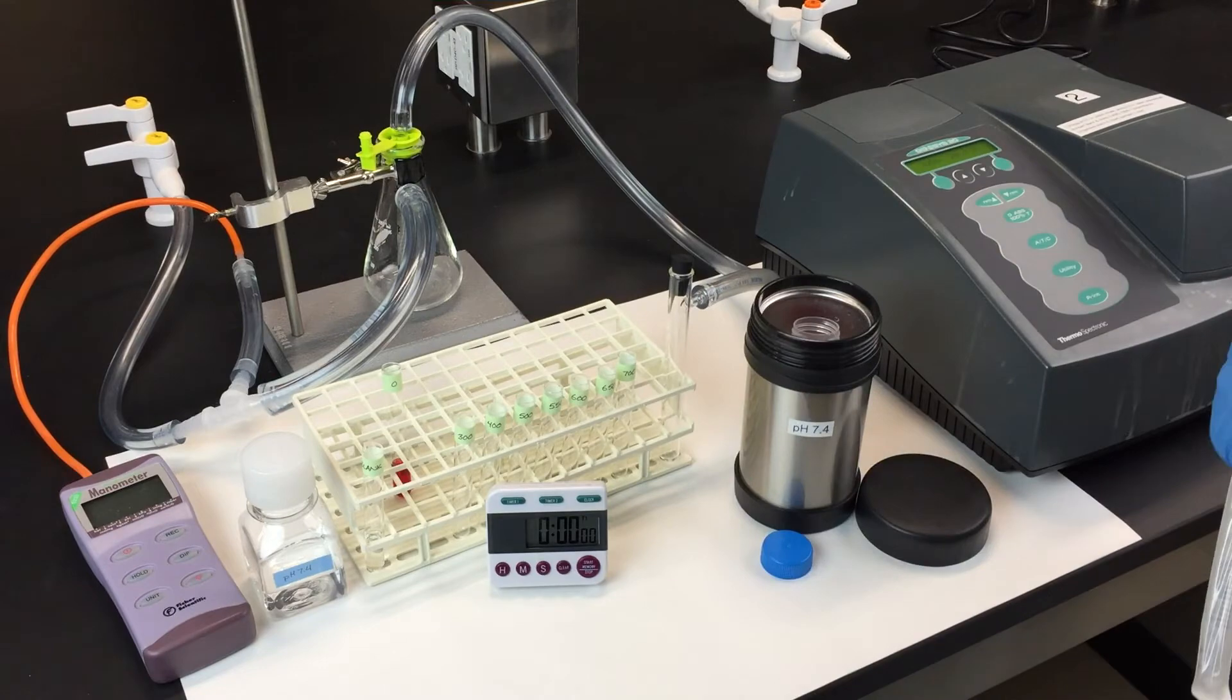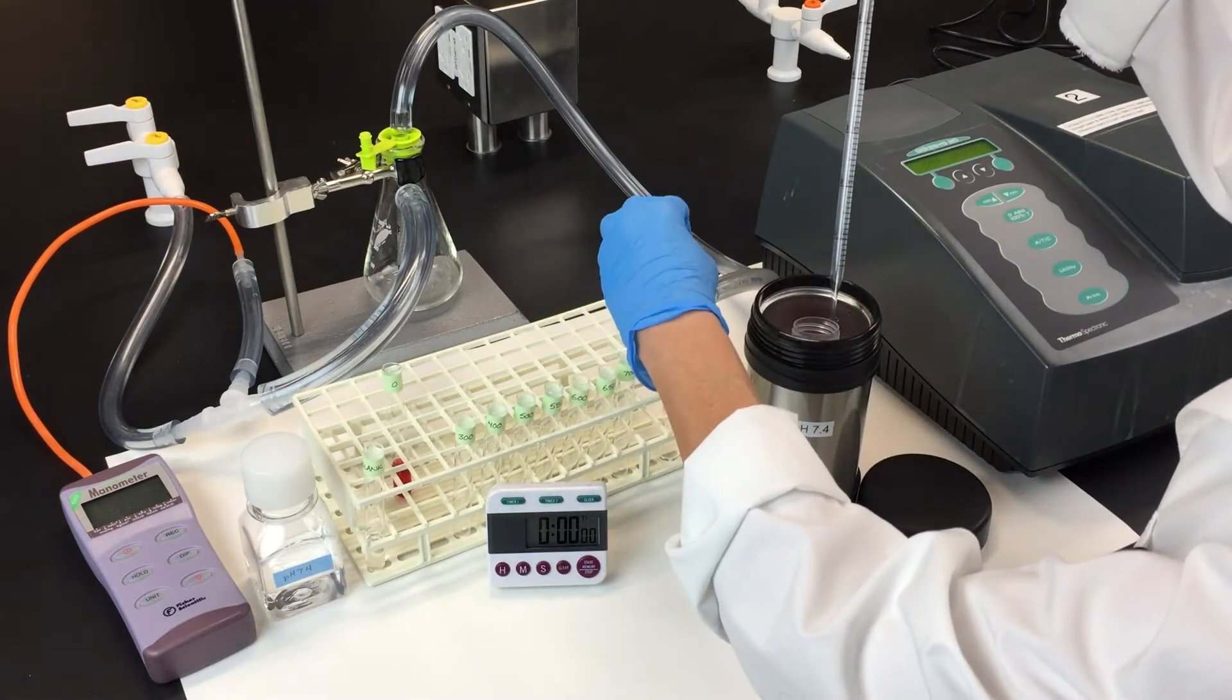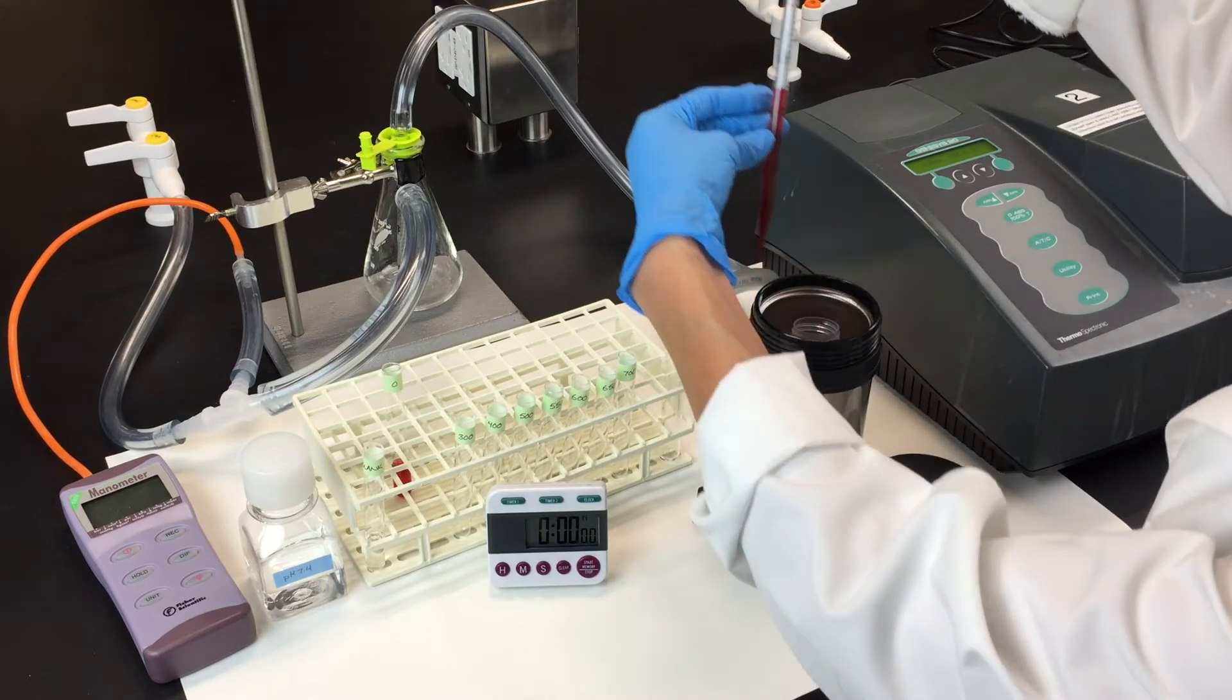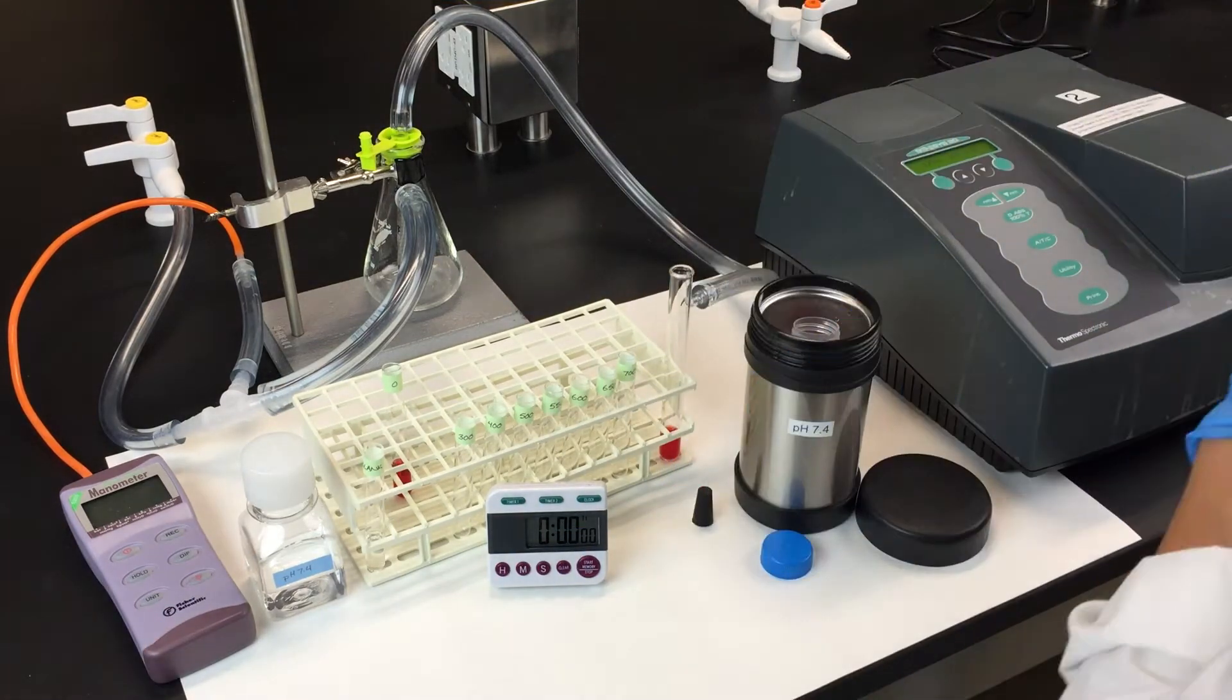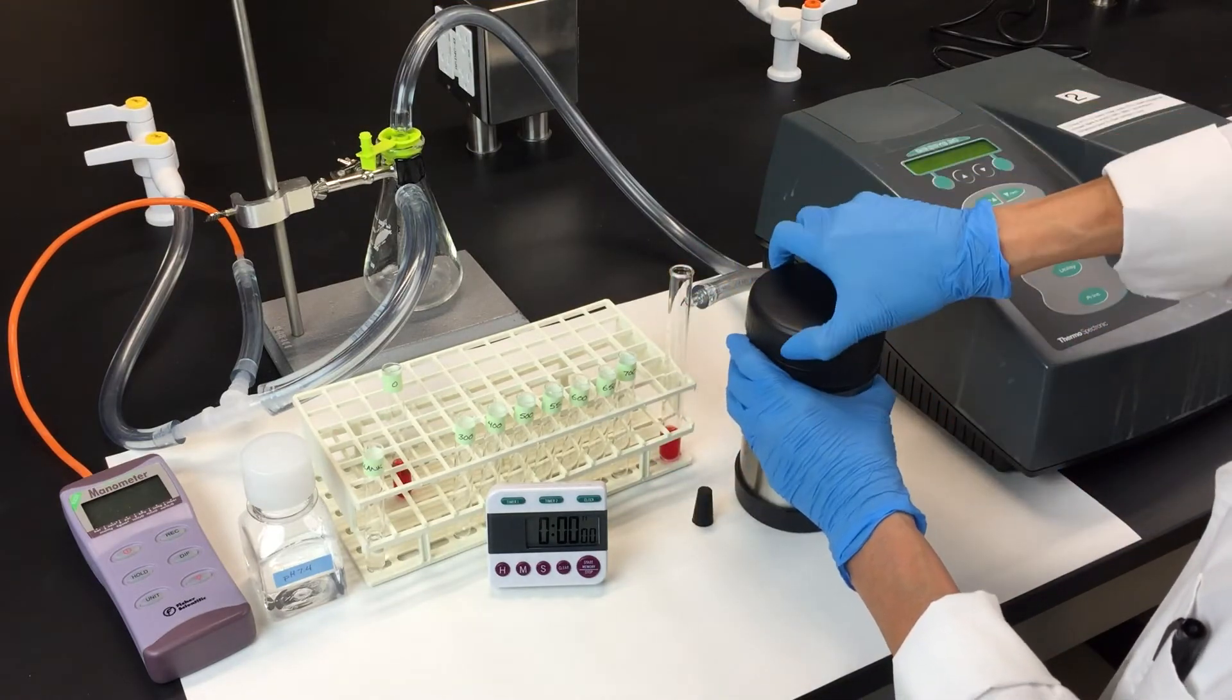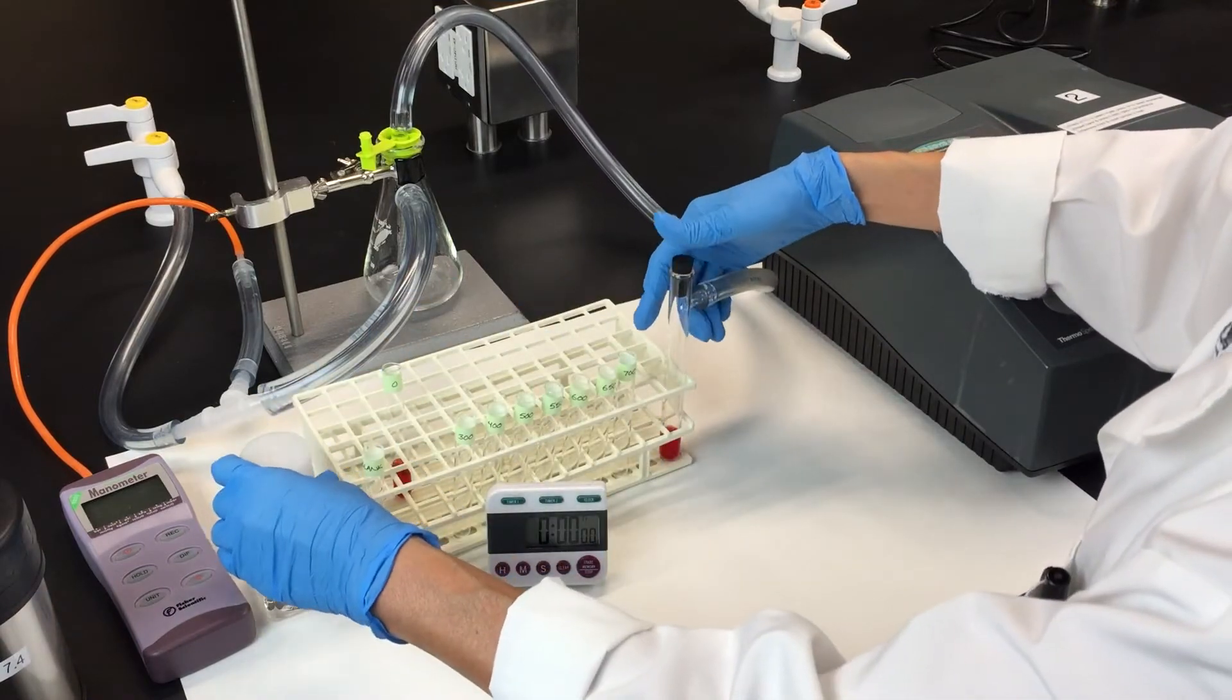Place 2.5 milliliters of hemolysate in the sidearm tube that's attached to the vacuum system. Place the rubber stopper in the top of the tube to seal the system.